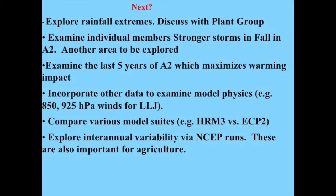What's next: explore rainfall extremes — assess rainfall diagnostics, examine individual members for the strongest storms in fall in A2, and look at the last five years of the run when warming is maximized. I also want to incorporate other model variables such as 850 and 925 hPa winds to examine model physics, compare various model suites like HRM3 versus RegCM versus WRF, explore interannual variability via the NCEP runs, and look at a gamma distribution to assess the significance of rainfall data.